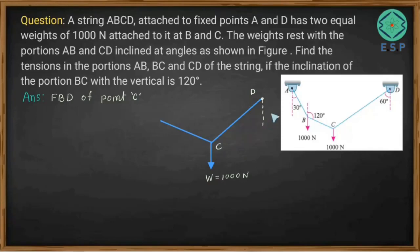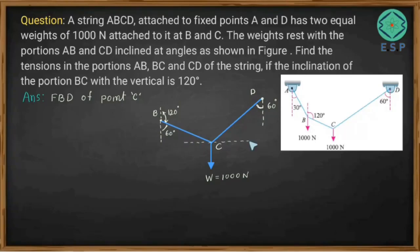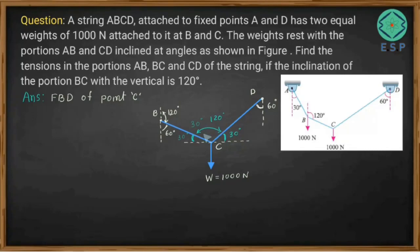The angle CD makes with the vertical is 60 degrees. For portion BC, the vertical line gives an angle of 120 degrees, so by geometry that side is 60 degrees, since the total is 180. Drawing a horizontal line through C, this gives 30 degrees on each side. The remaining angle on the other side is therefore 120 degrees. All angles at point C are now identified.